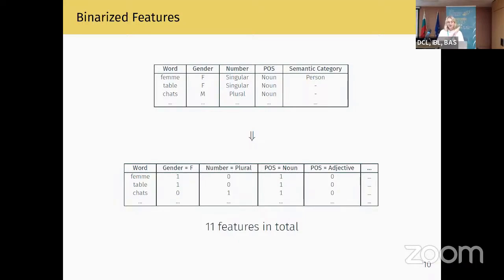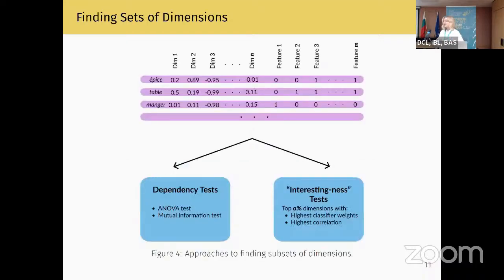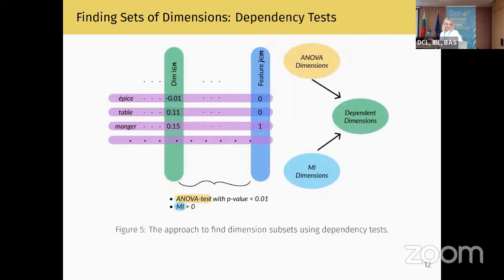So we had features called gender-feminine, gender-masculine, number-plural, number-singular, and so on, for a total of 11 features. Combining all our dimensions and all our features, we propose two types of tests: dependency-type tests and interestingness tests.